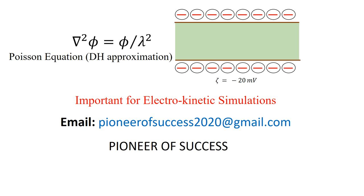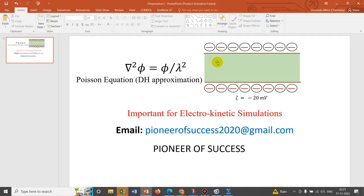Because of this redistribution of ions, a potential develops near the surface called the zeta potential. Now let us work on this equation. It is a second-order differential equation, so we need two boundary conditions. We have taken two walls, and on both walls we apply a surface potential of minus 20 millivolts. The solution space is the region between the two walls, and we will create this geometry in COMSOL.